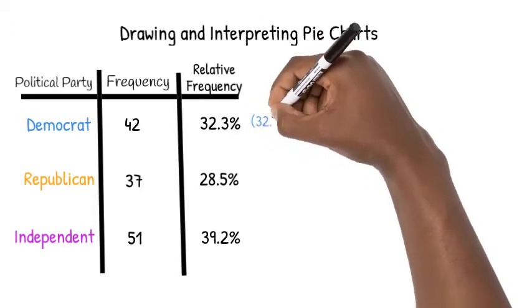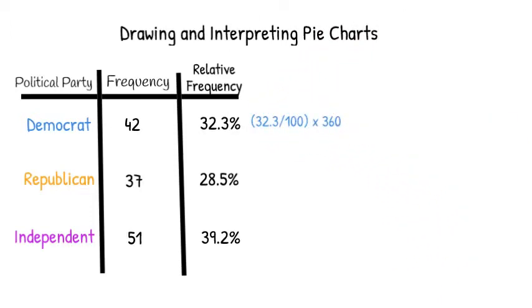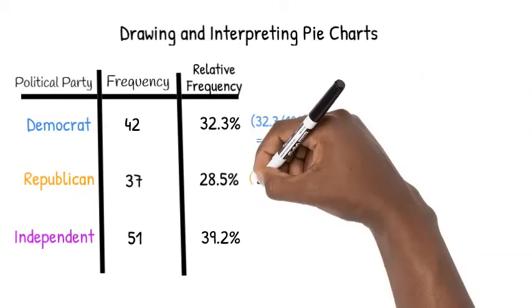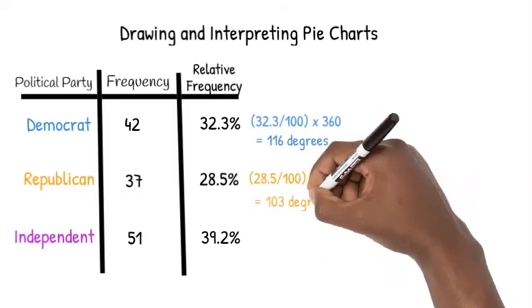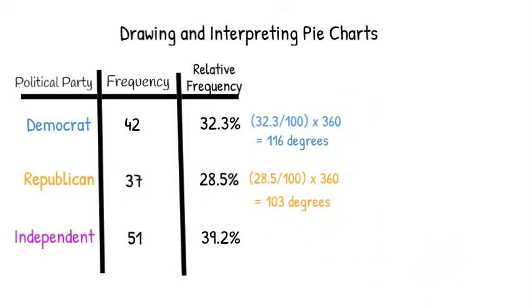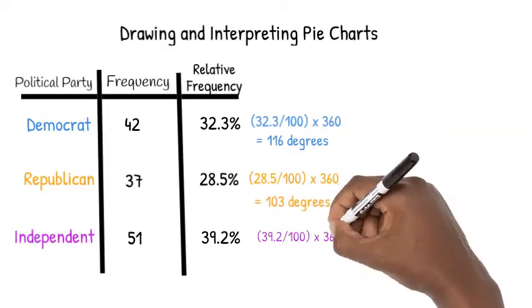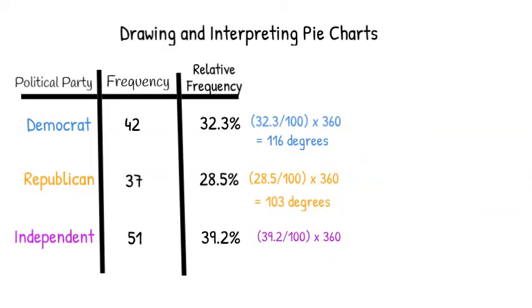We multiply 32.3 over 100 by 360 and get approximately 116 degrees. Then multiply 28.5 over 100 by 360 and get approximately 141 degrees.